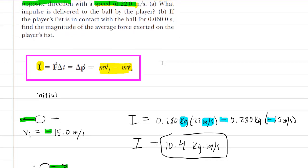We will head back up and take a look at what they want in part B. It says the player's fist is in contact with the ball for 0.06 seconds, which is a time interval. What is the magnitude of the average force exerted on the player's fist? We're looking for a force.